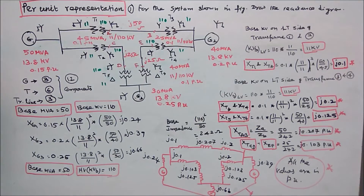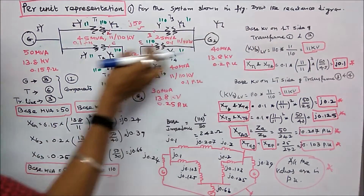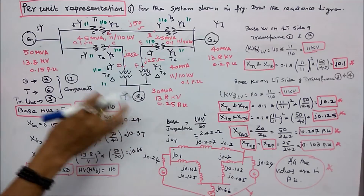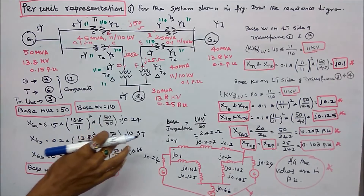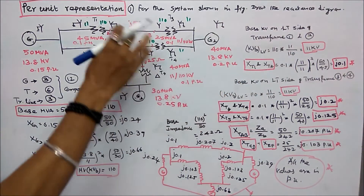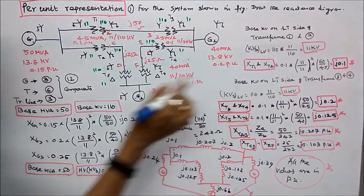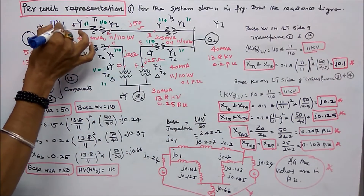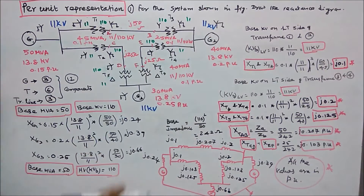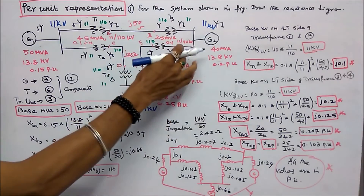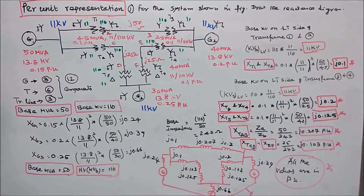Base kV = 110 kV, which is the high voltage side of the transformer. Once I choose the high voltage side, I find the base kV on the LT side of each transformer. Low voltage kV base = 110 × (11/110) = 11 kV. All LT sides are 11 kV since all transformers have the same turns ratio.